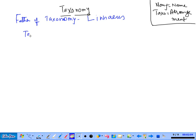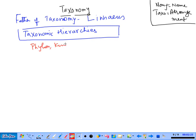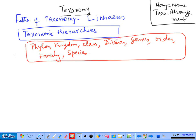There are various taxonomic hierarchies which you studied in junior classes. We have phylum, kingdom, class, division, genus, order, family, species, and sometimes subspecies. These are the taxonomic hierarchies.